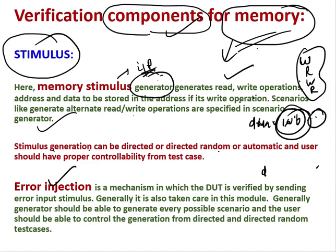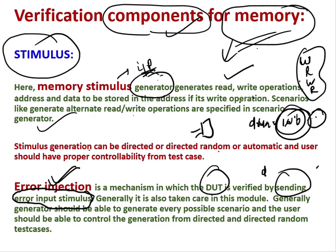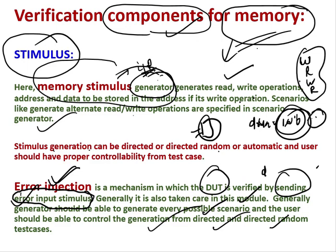Error injection is another concept. Sometimes knowingly invalid data are sent - the DUT is verified by sending error input stimulus. Error injection means the verification engineer provides invalid input to check how your DUT, your memory module, is going to react to that error. The stimulus generator should be able to generate all possible scenarios, both valid data and invalid data. The user should be able to control the generation from directed and directed random test cases.